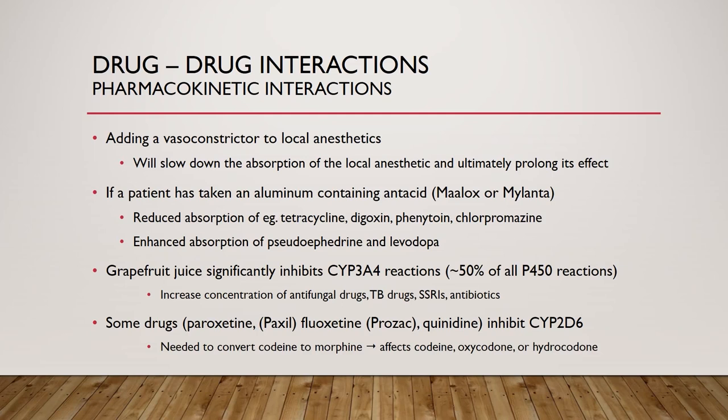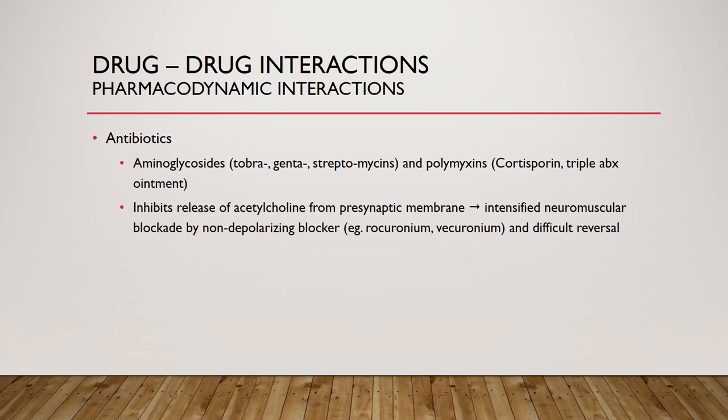Certain antibiotics — for example, the aminoglycosides tobramycin, gentamicin, and streptomycin, as well as the polymyxins such as Cortisporin and triple-antibiotic ointment — inhibit the release of acetylcholine from the presynaptic membrane. This will intensify the neuromuscular blockade caused by non-depolarizing neuromuscular blockers like rocuronium and vecuronium, making reversal of these drugs difficult.